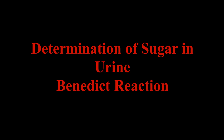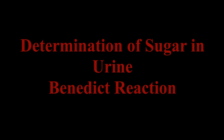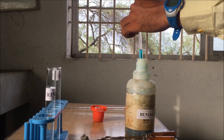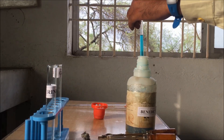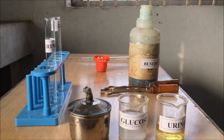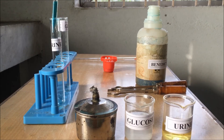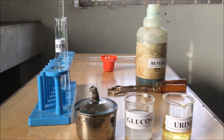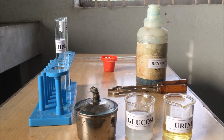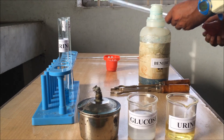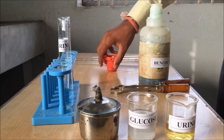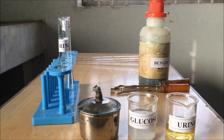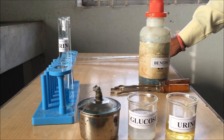Today we will determine the sugar contained in urine by using the Benedict reaction. To perform this experiment, pipette out 5 ml of Benedict reagent from the Benedict bottle and slowly transfer it into one of the test tubes. We have taken two test tubes — one for urine analysis and one for glucose analysis. After transferring the Benedict reagent, close the container tightly with its cap to avoid any spillage due to accidental events.